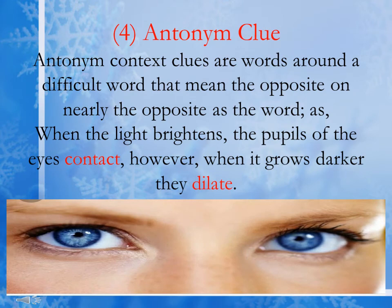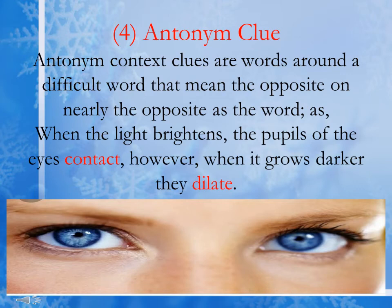The next clue is the antonym clue. Antonym context clues are words around a difficult word that mean the opposite, or nearly the opposite. For example: 'When the light brightens, the pupils of the eyes contract. However, when it grows darker, they dilate.' Here, 'contract' and 'dilate' are antonyms of each other. Since 'dilate' means wide or expand, 'contract' means to come together. In this way, we can understand the context using antonym clues.